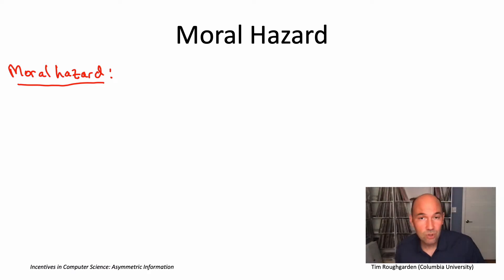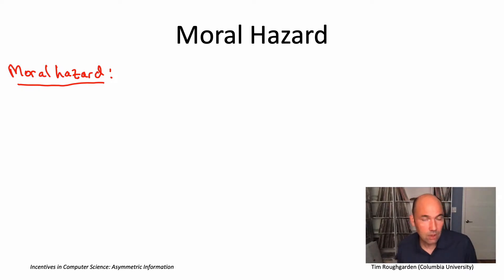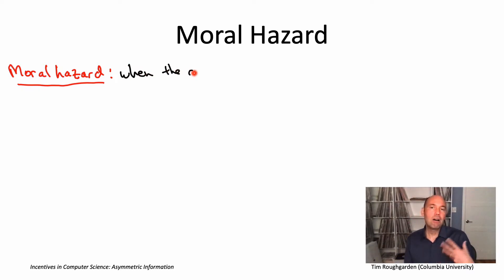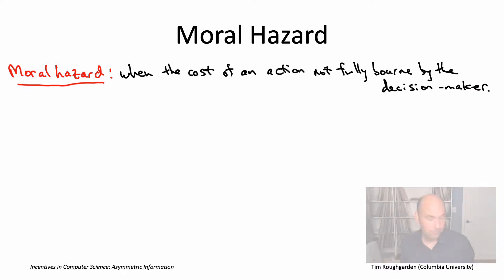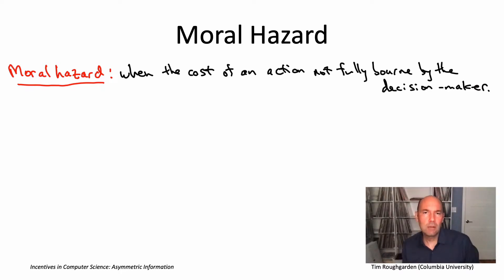Moral hazard basically refers to an incentive to take an action that would be harmful to others, or more formally, it's when you have an action where the cost of that action is not fully borne by the decision maker — it's borne at least partially by others. Moral hazard can be viewed as a type of information asymmetry in which the decision maker knows more about what action she will take than anybody else.